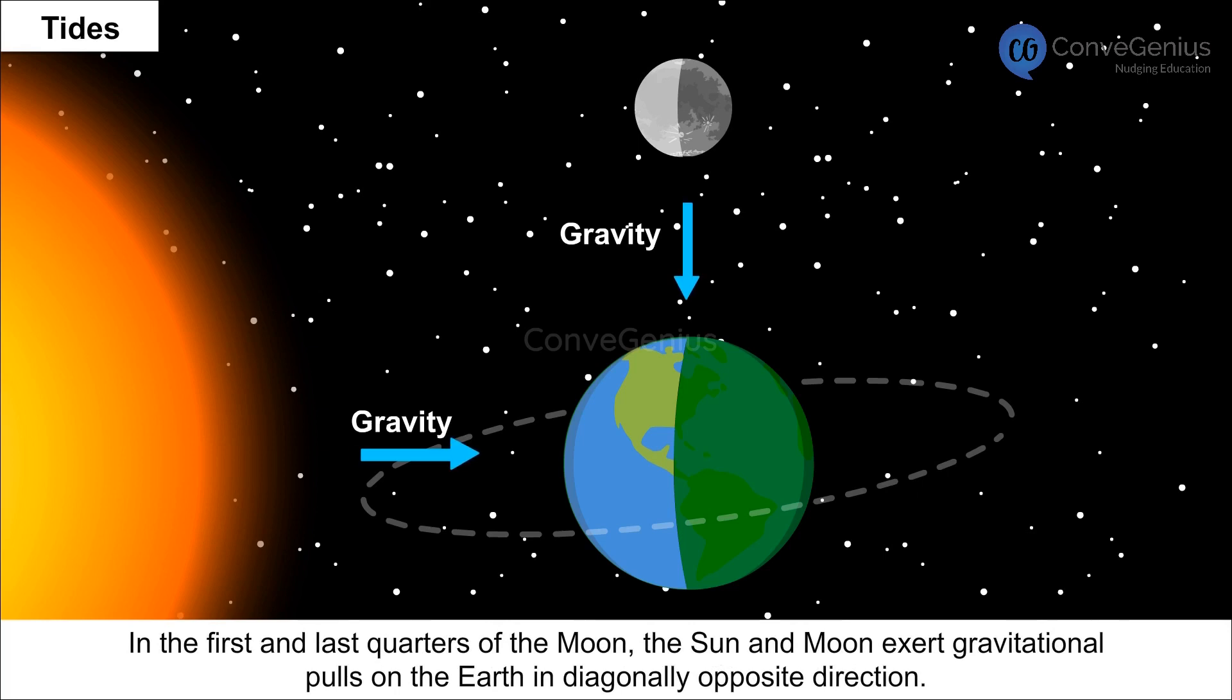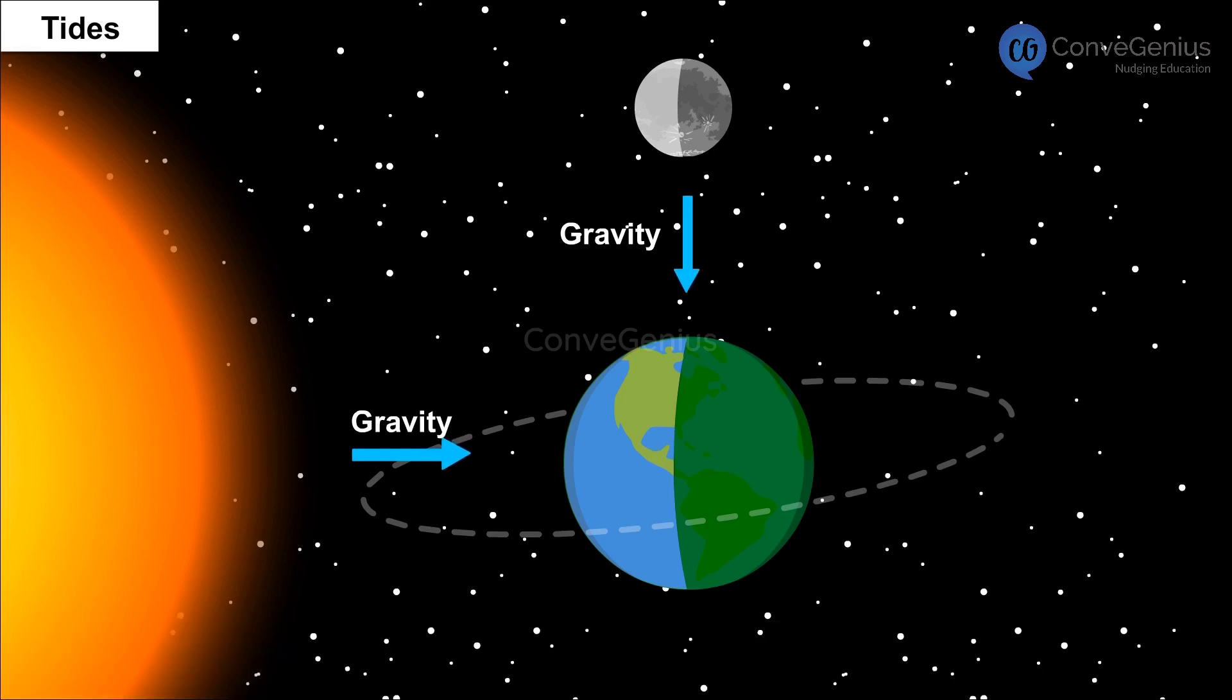In the first and last quarter of the moon, the sun and moon exert gravitational pulls on the earth in diagonally opposite directions. Hence, the net pull is at the lowest and tides caused are also low. Such tides are called neap tides.